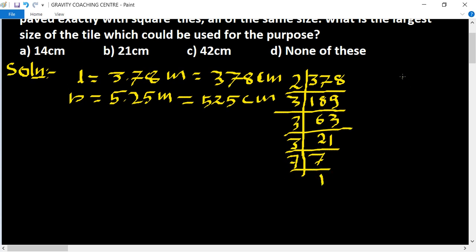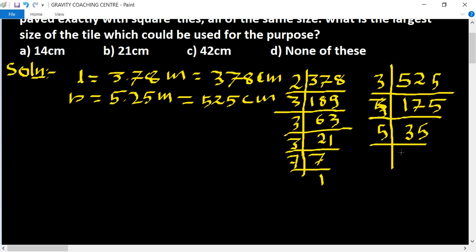Now for 525: 3 into 525 gives 175. 3 into 21 is 7. 3 into 15 is 5. 5 into 175 gives 35. 5 into 35 gives 7. So we have 3, 5, 5, and 7.